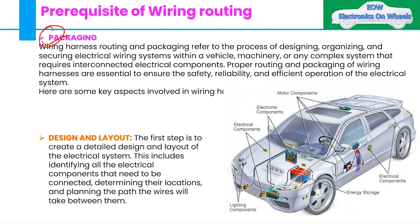The first thing is packaging. As the name suggests, it talks about the packaging of components where you are going to connect your wiring harness. It refers to the process of designing, organizing, and securing the electrical wiring system within the vehicle or machinery. Proper routing and packaging of wiring harness are essential to ensure safety, reliability, and efficient operation of the electrical system.